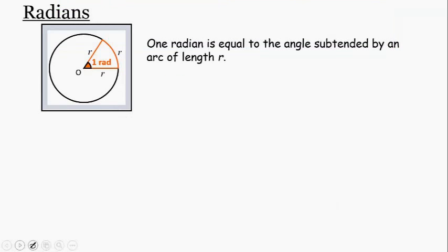So first of all, what is a radian? Well, one radian: if we had a circle, any circle that had a radius of length r, a radian is the angle that we get when we take the radius and get an arc length that is the same as the radius. So that angle there is one radian. One radian is equal to the angle subtended by an arc length of r.